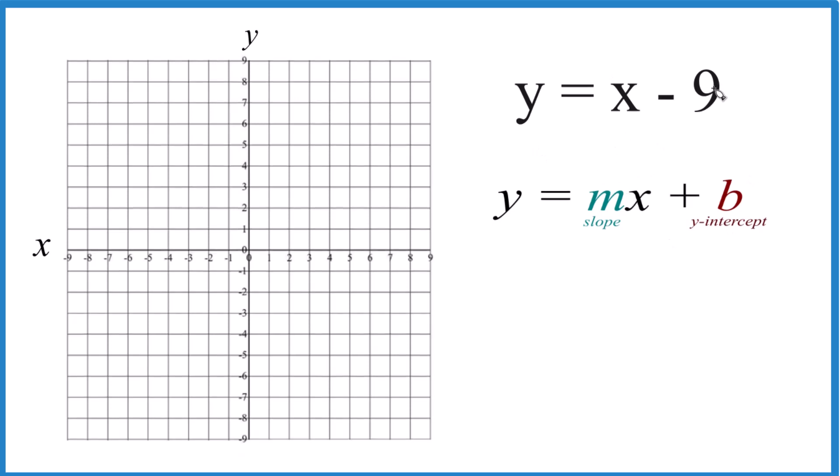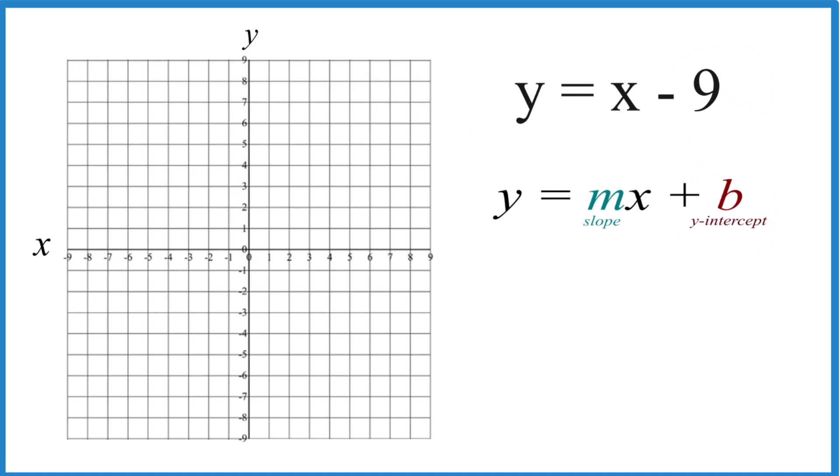So we have the y-intercept right here, negative 9. We go over here to our y-axis, we find negative 9 right there, almost off the paper.